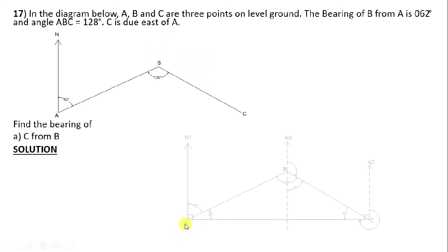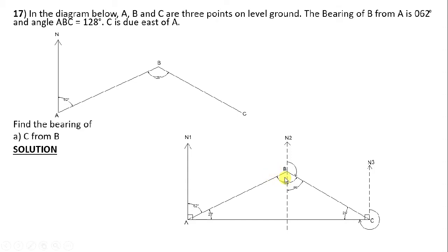We get our reference from the north. N1 and N2 are parallel lines, so we can find alternate angles. Since the bearing of B from A is 62 degrees, the alternate angle at B is also 62 degrees. We then subtract 62 from 128 degrees, remaining with 66 degrees — so that 62 + 66 = 128 degrees.